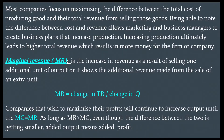Marginal revenue, or MR, is the increase in revenue as a result of selling one additional unit of output — it shows the additional revenue made from the sale of an extra unit. MR is calculated by the change in total revenue over the change in quantity. Companies that wish to maximize their profits will continue to increase output until MC equals MR — that is, marginal cost equals marginal revenue.